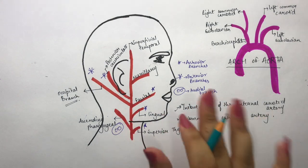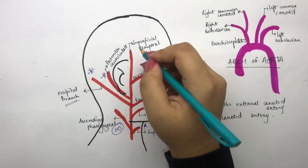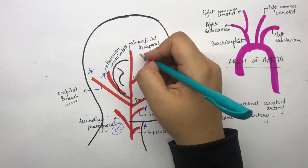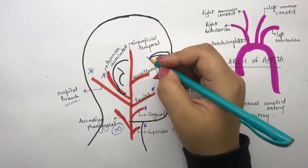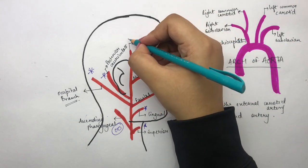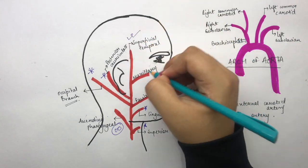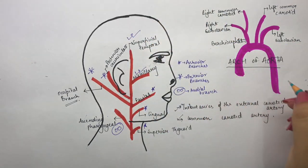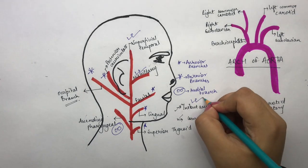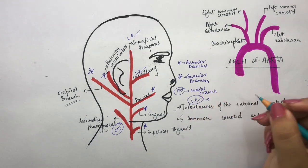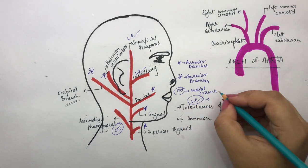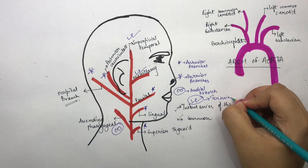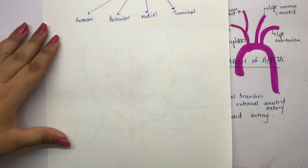Finally, the terminal branches — there are two: the superficial temporal and the maxillary artery. These are the terminal branches as they terminate the external carotid artery.